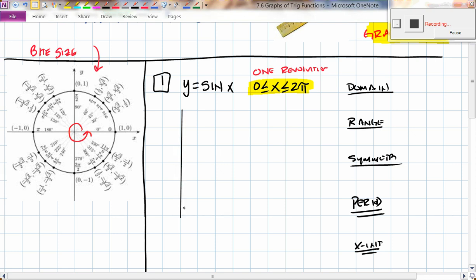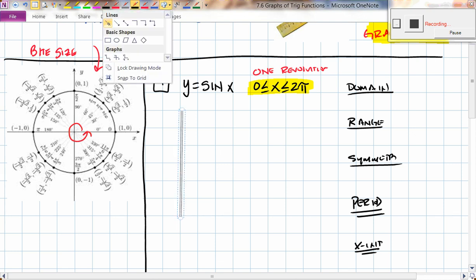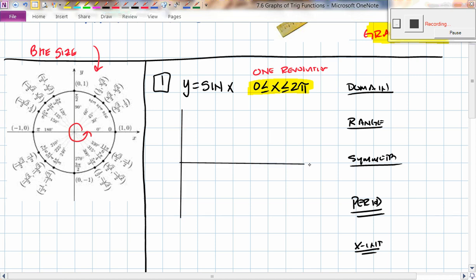So first things first, let's draw ourself a coordinate plane that is restricted by our 0 to 2π. With your rulers, go ahead and space these out. What we're going to do is we're going to take a look at all of the radian measures from 0 to 2π. So we're going to hit 0, π/2, π, 3π/2, and then come back to 2π. We're going to go in increments of π/2.